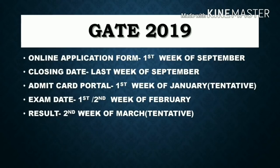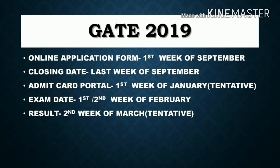Now let's talk about GATE 2019 dates. The online application form will be available from the first week of September. The closing date will be the last week of September. The admit card portal will open from the first week of January. The exam date will mainly fall in the first or second week of February, and results will be announced in the second week of March — these are tentative dates.